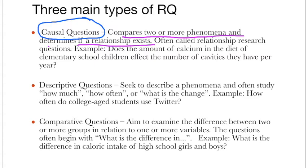Here I want to see whether the calcium amount has an effect. I am not saying significant or not — that we cover in the hypothesis — but does this amount affect cavities? We always assume that if calcium is good in the diet, there will be fewer cavities. This is our assumption, but then we have to justify and test these relationships. So whenever we make a question comparing two or more phenomena to determine if a relationship exists, we go for a causal question.